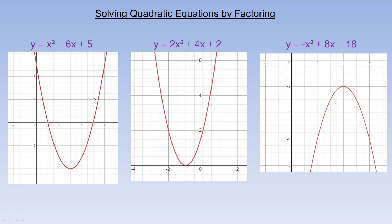If we look at the coordinates of these points, notice that all the places where the graph crosses or just touches the x-axis, y is always 0. And this is always true — any point on the x-axis has y equal to 0. So that's why these roots to these equations are often called zeros, because what we're trying to do is find the x value that makes y equal to 0.